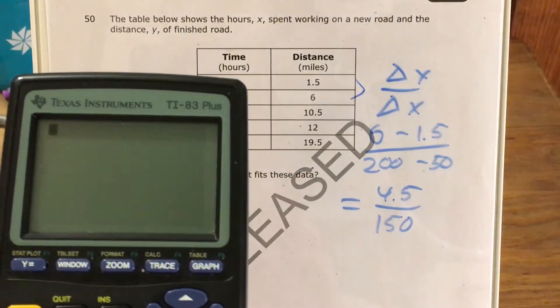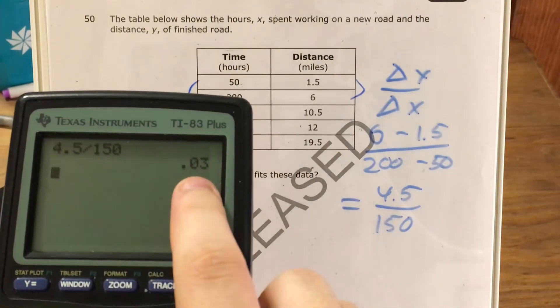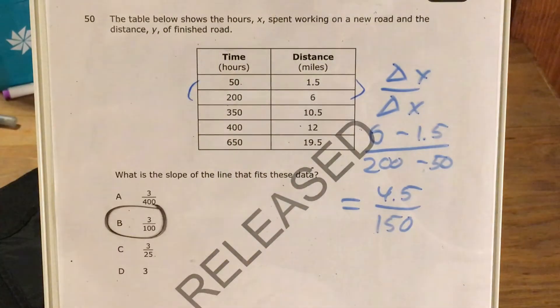I can find this in my calculator, 4 and a half divided by 150, and I get the exact same answer, 3 hundredths. So either way, whether using the calculator to cheat, or whether using the calculator to just finish up the math for me, I got this answer of B, 3 hundredths.